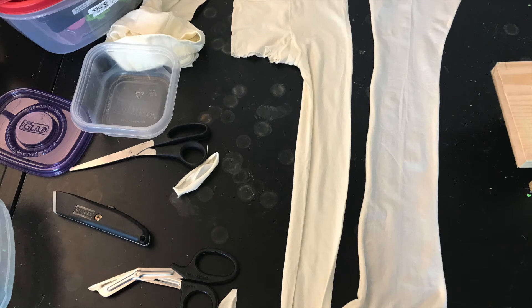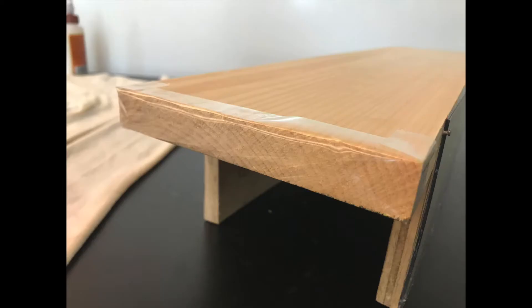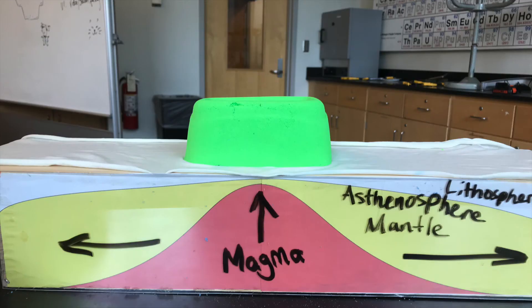Next, cut a stocking from the top of the leg and remove the foot part as well. Finally, open the sides of the stocking to make it a flat piece of cloth, which represents the oceanic crust. To prevent the cloth from catching on the wood, cover the edges with packing tape. Set up the demonstration with kinetic sand, which represents the continental crust, and you're ready to use our Rift Valley model.